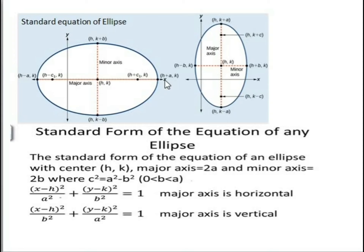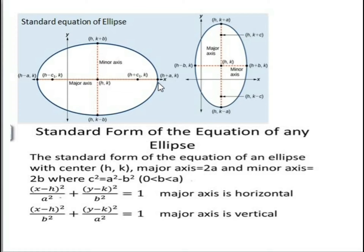The end points of the major axis are called the vertices of the ellipse. We denote the length of the major axis by 2a and the length of the minor axis by 2b. The distance between the two foci is 2c. The length of the semi-major axis is a and the length of the semi-minor axis is b.